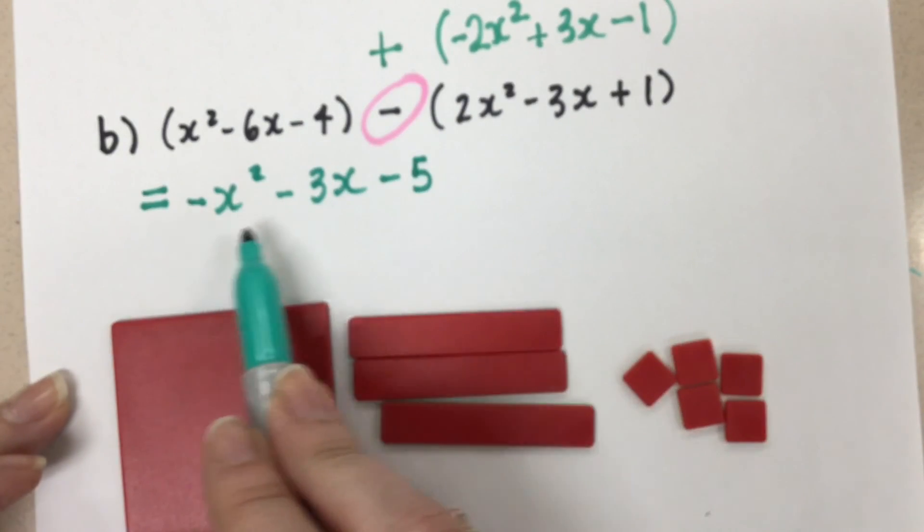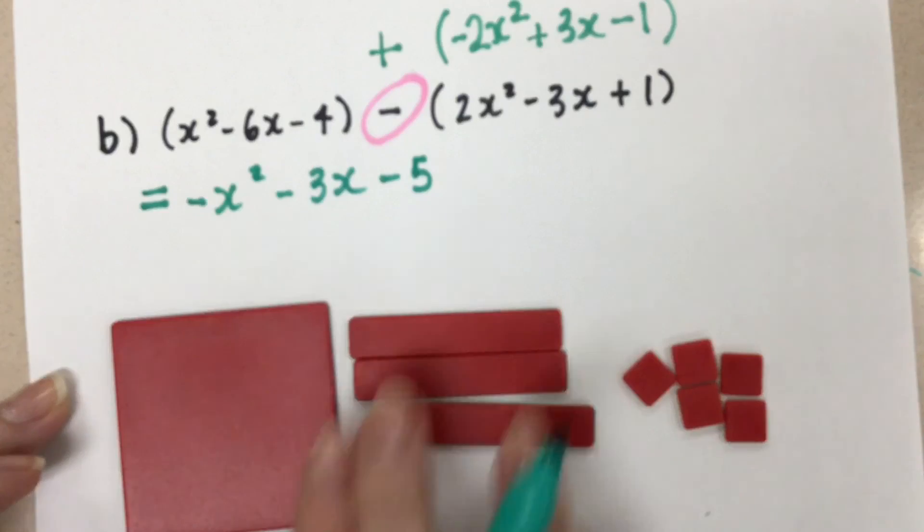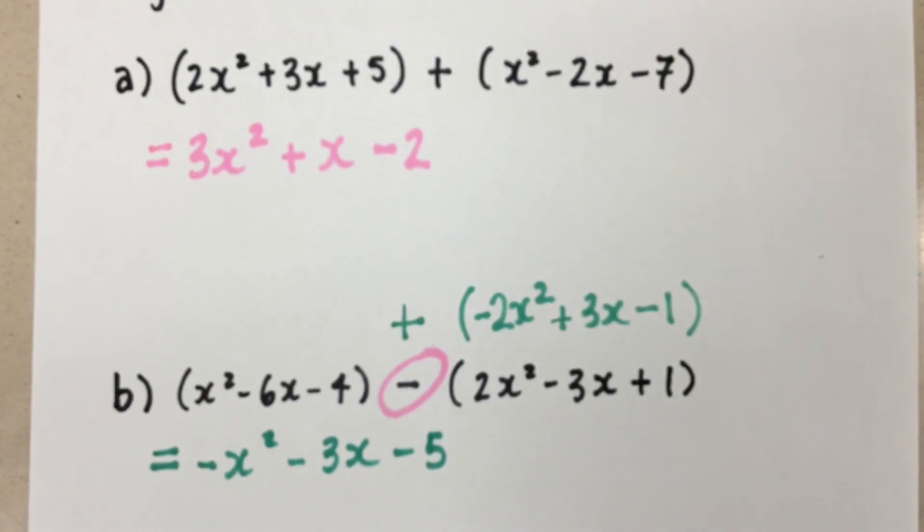So we want to think of the subtracting polynomials as adding the opposite polynomial. And then that will help us with our algebra tiles. We don't want to combine any of these terms because they're not alike. They're all different. So we keep our answer just like this. That is how we add and subtract polynomials using algebra tiles. Thanks for watching. Mrs. A loves math.